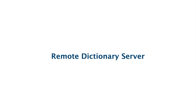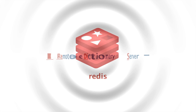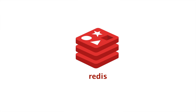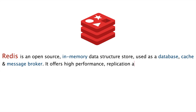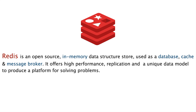Redis stands for Remote Dictionary Server — take the first two letters of each word and it makes 'Redis'. Redis is basically an open-source BSD-licensed in-memory data structure store. By 'data structure store' it means that it makes use of various data structures to store the data, and it is widely used as a database.